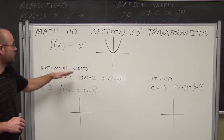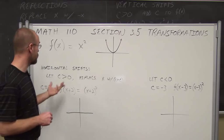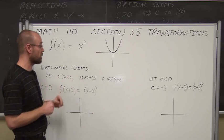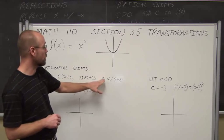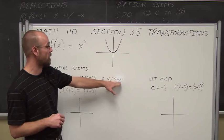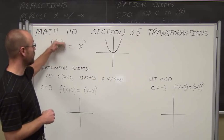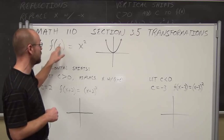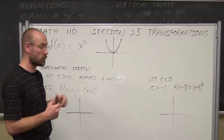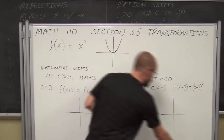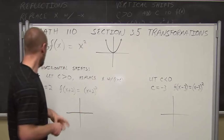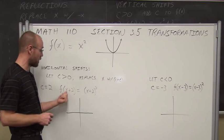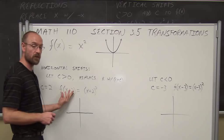The first thing we're going to look at is a horizontal shift. When it comes to a horizontal shift, we're going to let c be some number greater than 0 for our first example. We're going to replace x with x plus c. So we're evaluating this function — instead of f of x, we're going to put f of x plus c in here and see how that changes the function. What if c is 2? We're going to evaluate the function for x plus 2 instead of just x.